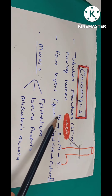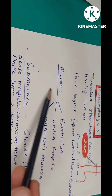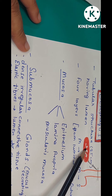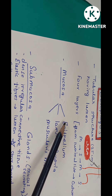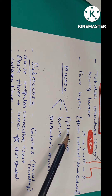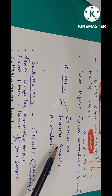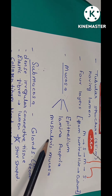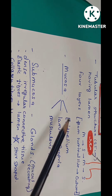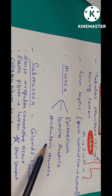The mucosa is the innermost layer facing the luminal side. It has a non-keratinized stratified squamous epithelium. This epithelium rests on the lamina propria, which is loose connective tissue, and then there is the muscle layer of the mucosa — the muscularis mucosa.